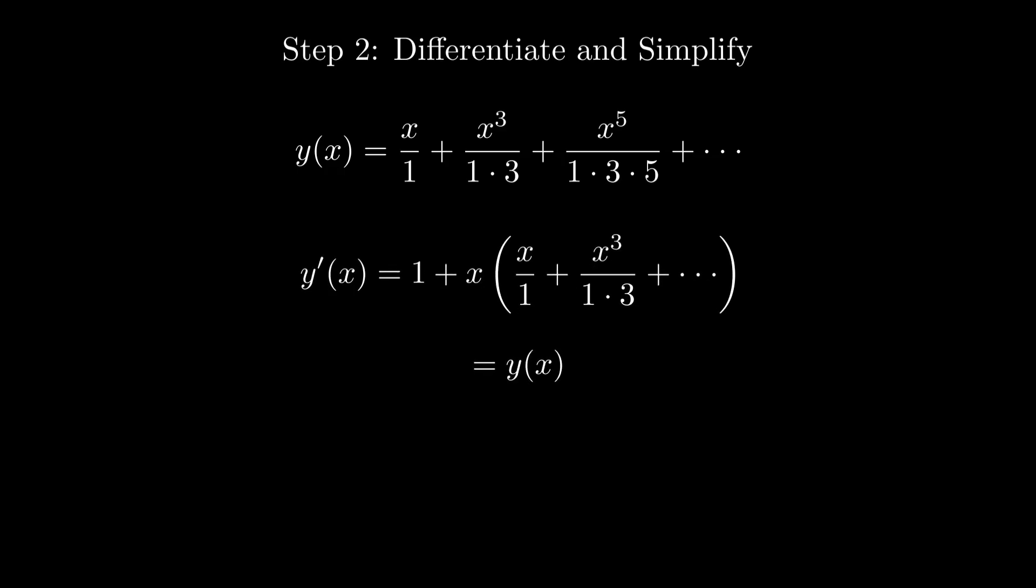We now solve this differential equation. First, we rewrite it as y prime minus x times y equals 1. Ignoring the constant for a moment, we solve the homogeneous part: dy over dx equals x times y. Separating variables, we get 1 over y dy equals x dx. Integrating both sides gives natural log of y equals x squared over 2 plus a constant.